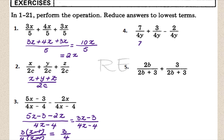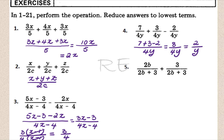The denominators are the same, so we just add the numerators: 7 plus 3 minus 2 over 4y. 10 minus 2 is 8, giving 8 over 4y. 8 over 4 is 2, so the answer is 2 over y.